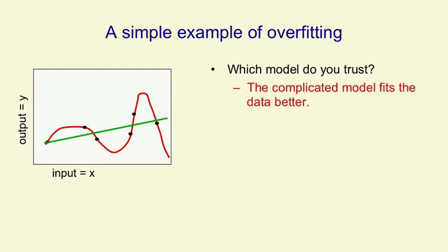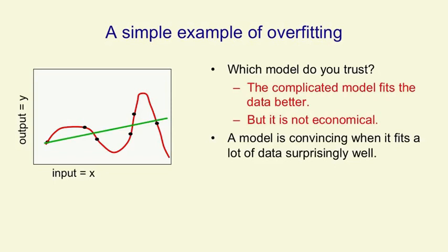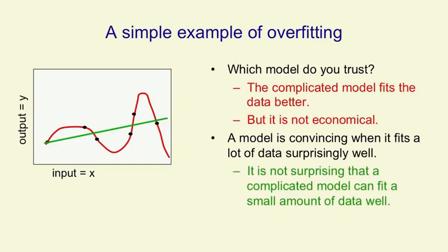The complicated model certainly fits the data much better, but it's not economical. For a model to be convincing, what you want it to do is be a simple model that explains a lot of data surprisingly well, and the polynomial doesn't do that. It explains these six data points, but it's got six degrees of freedom. So wherever these data points were, it would be able to explain them. We're not surprised that a model this complicated can fit that data very well, and it doesn't convince us that this is a good model.